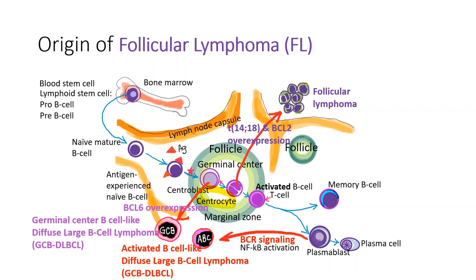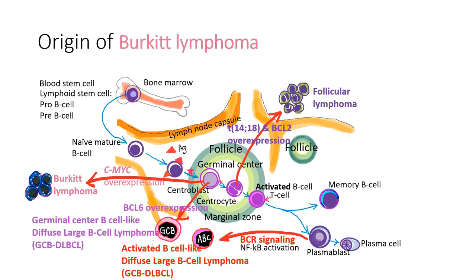Follicular lymphoma originates from centrocytes in the germinal center of the follicle. They have translocation of chromosome 14 and 18, activating BCL-2. Burkitt's lymphoma, a highly aggressive lymphoma, originates from the centroblasts in the germinal center and has c-MYC overexpression.